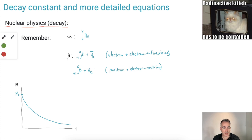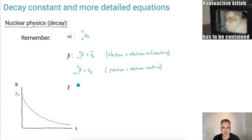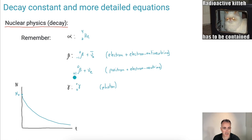We've also got gamma, but gamma is really boring because it's just a photon — zero mass, zero charge. So it doesn't really change the nucleus. Whatever element undergoes gamma decay, it won't change — nothing will change, because it's zero, zero.